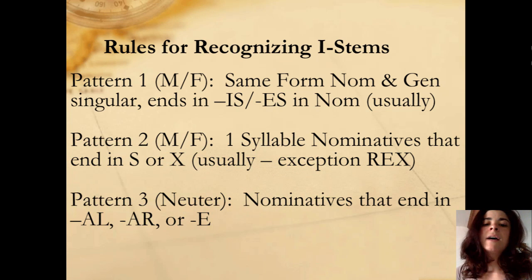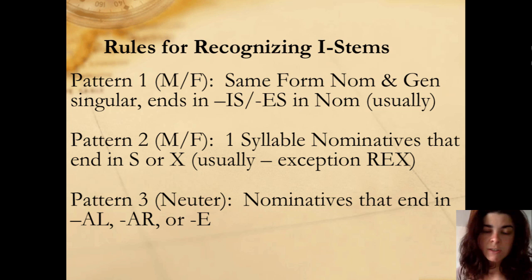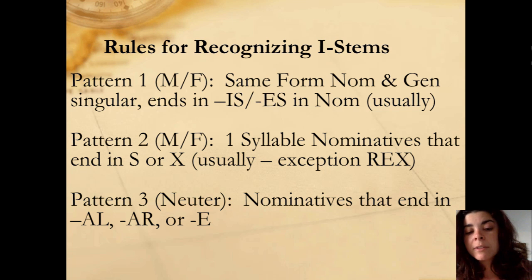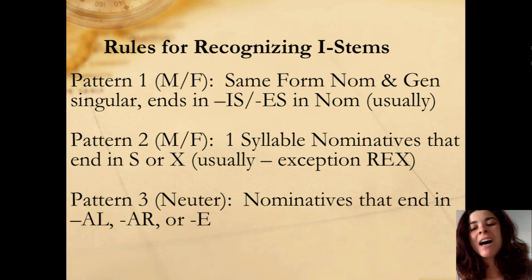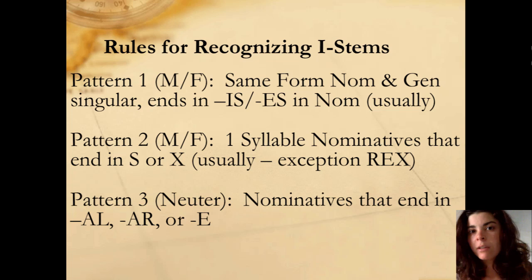The second pattern is that you're going to have a one-syllable nominative that ends in S or X. The exception we already know is rex, regis — rex, regis is not an i-stem. With both of the masculine-feminine patterns, it's usually not always. The third pattern, however, with neuter words only, is always, as far as I can remember. Nominatives that end in AL, AR, or E will all follow the neuter i-stem pattern. They're at least really regular, and you can apply that rule as a given for those.